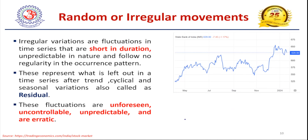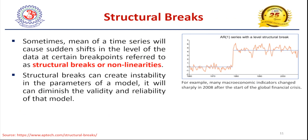Random or irregular movements are fluctuations in time series data over shorter durations. They are unpredictable in nature and follow no regularity in the occurrence of patterns. Looking at the image on the right-hand side, we cannot predict whether the pattern is cyclic, trend, or seasonality — it occurs in a short period of time and we cannot predict what will happen. Whatever is left out from trend, cyclic, and seasonal variations is called random or irregular movement, also referred to as residual. These fluctuations are unforeseen, uncontrollable, unpredictable, and erratic in nature, but they still make maximum influence on longer period data observations.